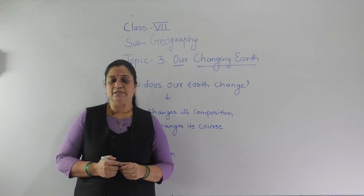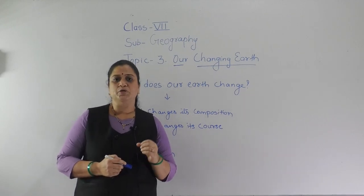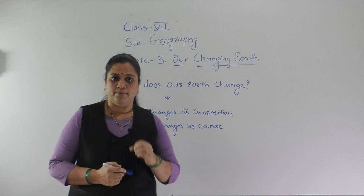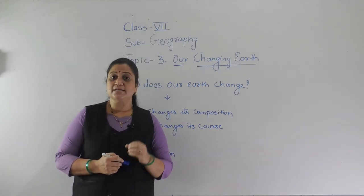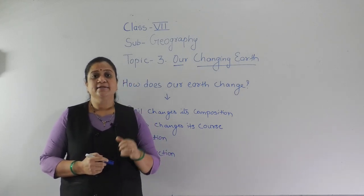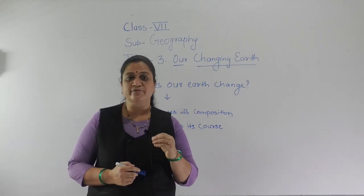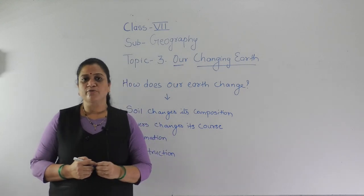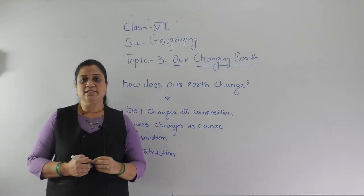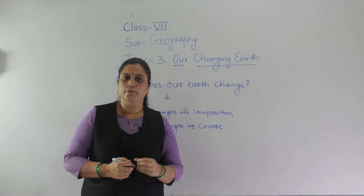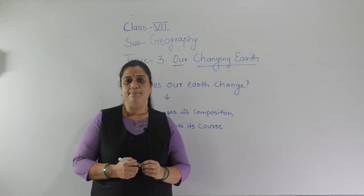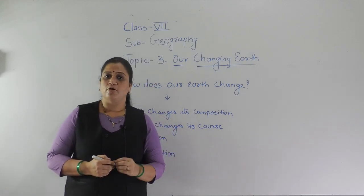On the earth's surface we see many landforms — mountains, plateaus, plains, river valleys. Now, how have these landforms been formed? There are some forces inside the earth which make these changes. The landforms formed on the surface of the earth take millions of years to form. This process of changing the earth is not a short process — it takes millions of years to form mountains, plateaus, and all these landforms.